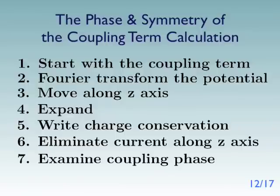So we're going to look at the symmetry of the coupling term. We start with that coupling term. We take the Fourier transform of the potential, so the potential now becomes a current. We move along the z-axis only to make things easier. We expand that. We write out our charge conservation law, so that we can eliminate the current along the z-axis. The result of all this work is we will totally understand what the coupling term is.